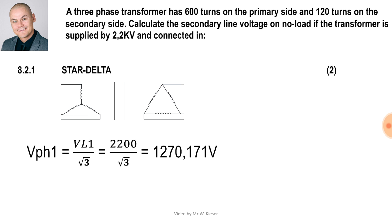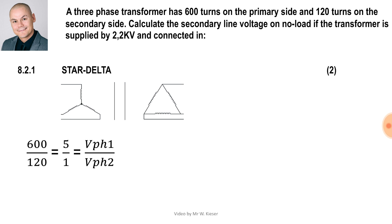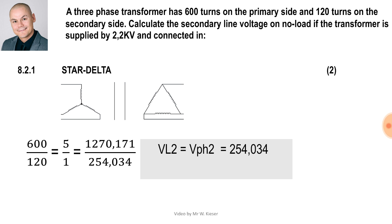The original question asks for the secondary line voltage. The secondary side is delta connected, so VL2 equals V phase two. With 600 turns on the primary and 120 turns on the secondary, our ratio is 5 to 1. Substituting V phase one, we determine the secondary phase voltage is 254.034 volts. Checking: 254.034 goes into itself once and into 1270.171 five times. Therefore the secondary line voltage equals the phase voltage: 254.034 volts.